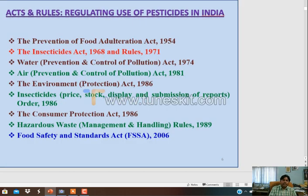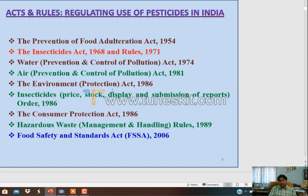The Indian government has established many laws, acts, and rules to regulate the use of pesticides - the Prevention of Food Adulteration Act 1954, the Insecticides Act 1968, the Consumer Protection Act, and various other acts enacted by the Government of India. However, despite these acts, we are still facing the problem of pesticide contamination.